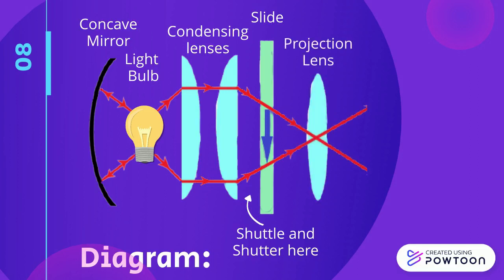Then, light passes through the projection lens, which is a converging lens.